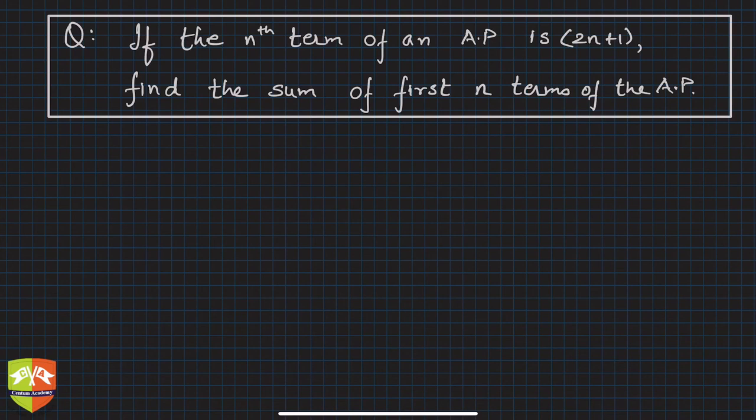Hello and welcome to problem solving session on arithmetic progression. We are taking problems which deal with sum of n terms of an AP. The given question says if the nth term of an AP is 2n plus 1, find the sum of first n terms of the AP.